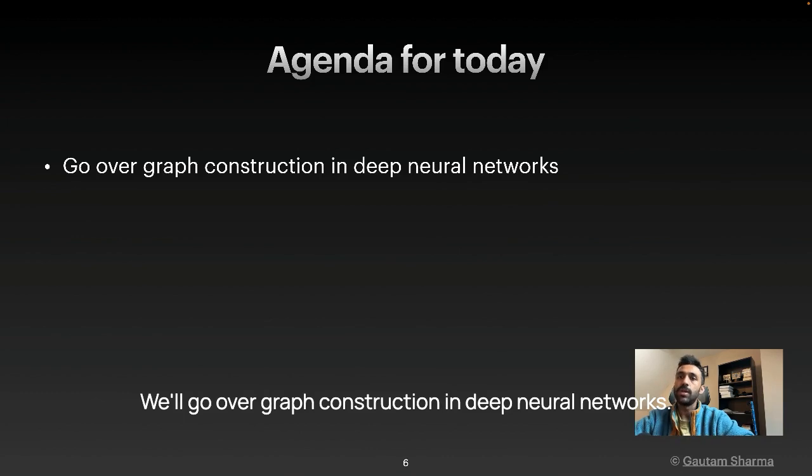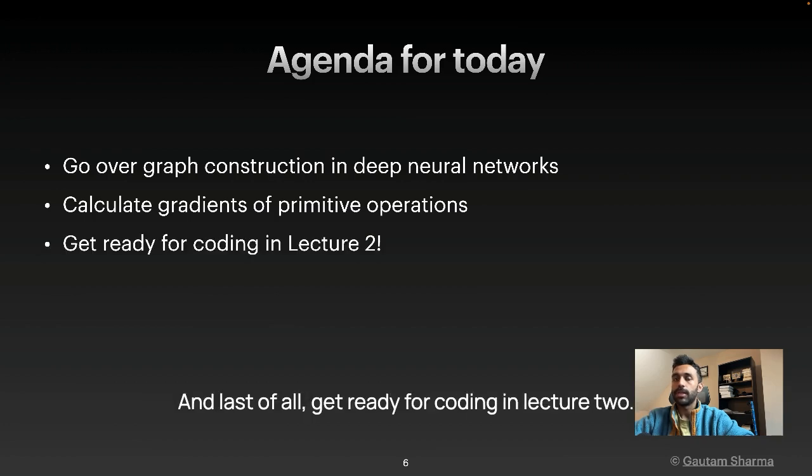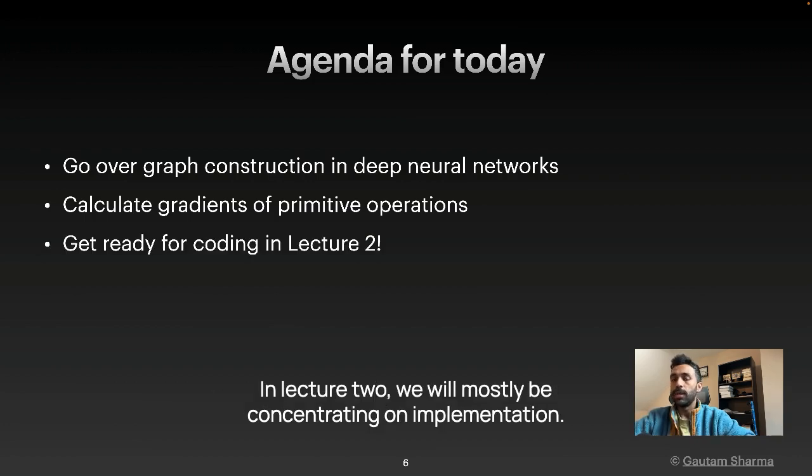We will go over graph construction in deep neural networks. We will also calculate gradients of primitive operations. And last of all, get ready for coding in lecture two. In lecture two, we will mostly be concentrating on implementation.